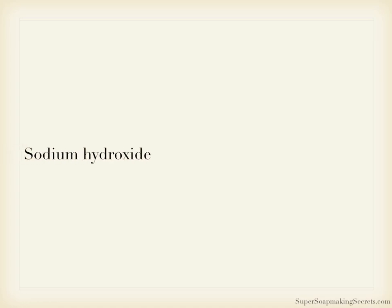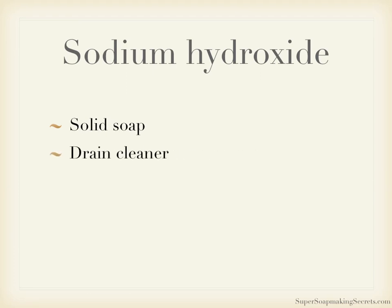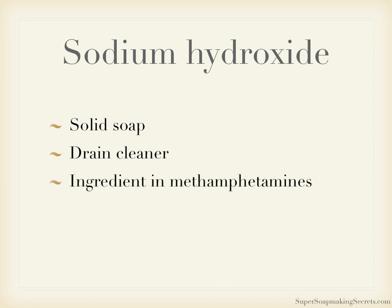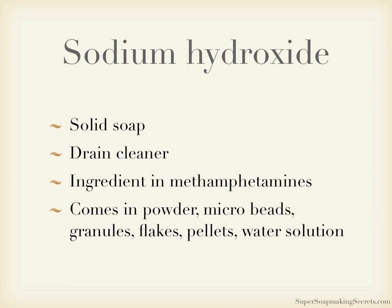Sodium hydroxide and potassium hydroxide. Sodium hydroxide, commonly known as caustic soda, is used to make solid soap. It's also used as a drain cleaner or declogger. It's used as an ingredient in the production of methamphetamine, an illegal and dangerous drug. Thus, keeping large quantities of lye is controlled or regulated in some areas. For soap making, only pure sodium hydroxide is used. Lye comes in different solid dry forms such as powder, microbeads, granules, flakes, and pellets, and in liquid form as a solution mixed with water.